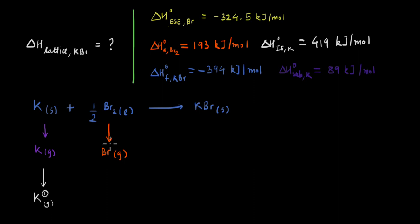And similarly for bromine, we can write the reaction for the atomization of bromine liquid into bromine gas. And since we know the electron gain enthalpy of bromine, we can extend this to form the bromine ion like this.